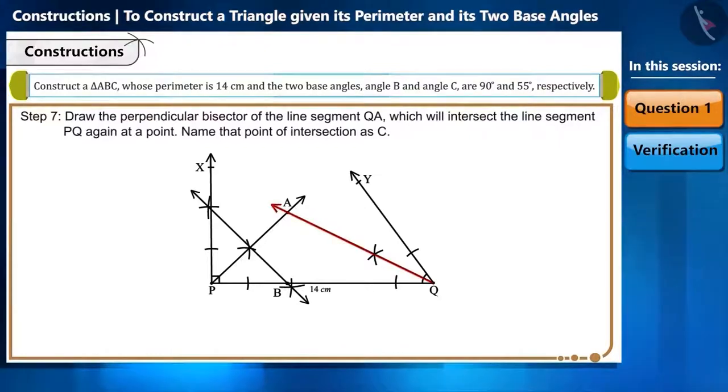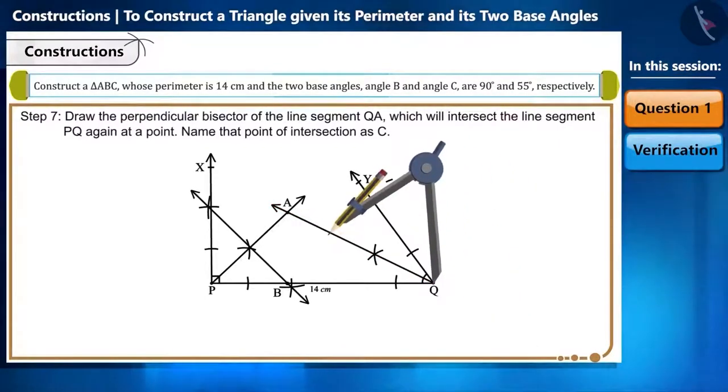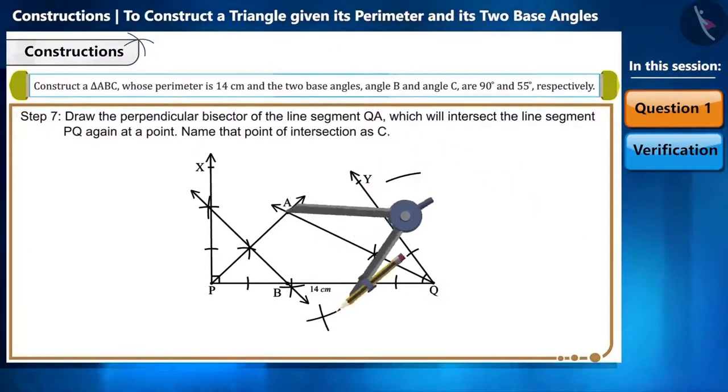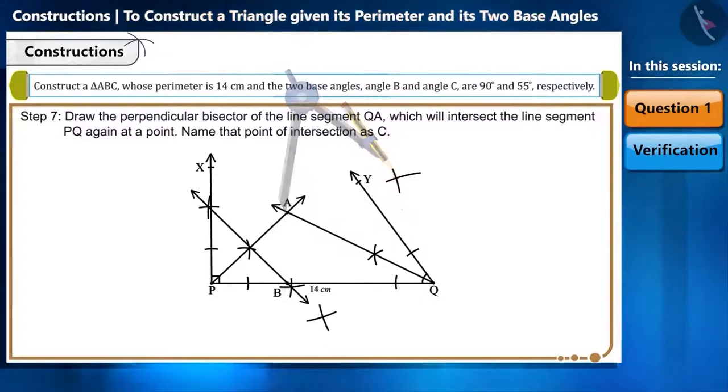Similarly, draw the perpendicular bisector of the line segment QA, which will intersect the line segment PQ again at a point. We will name the point of intersection as C.